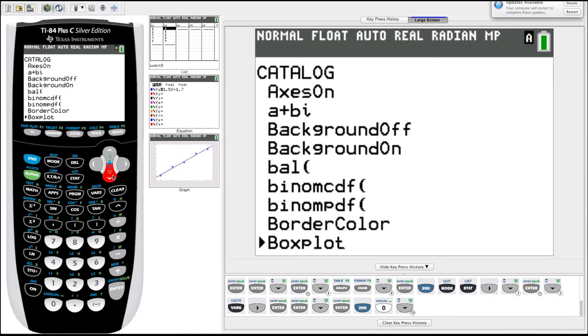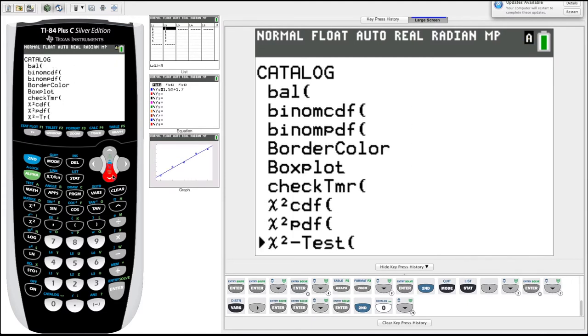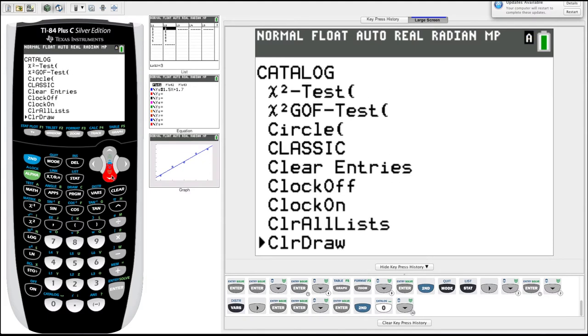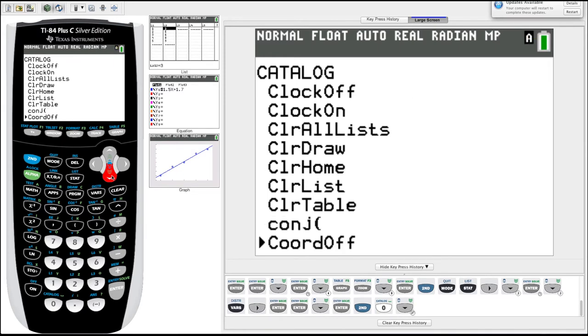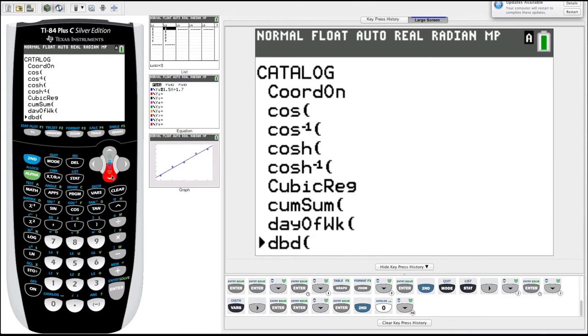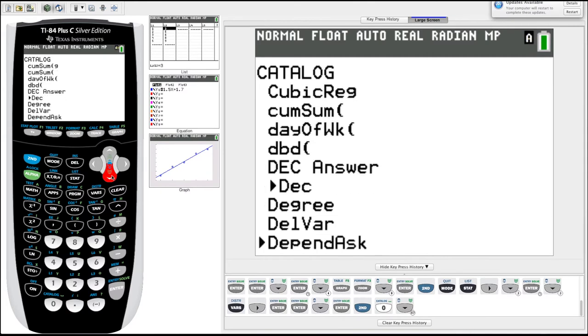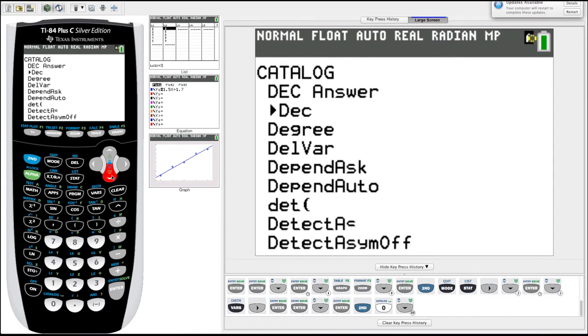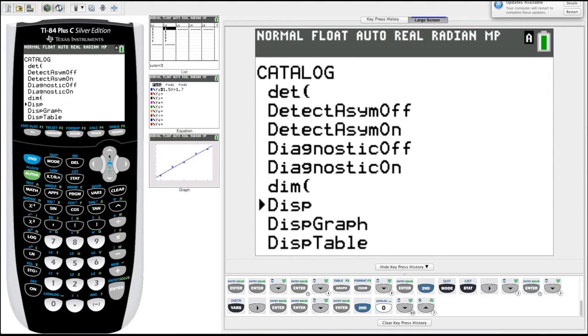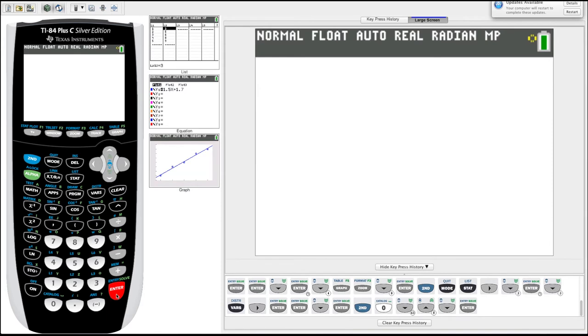And that will turn on the calculation of those r squared. Then you'd have to go back and recalculate your linear regression if you want to see those r squared values, r and r squared values. Okay, keep scrolling. We're down to d. It's going to be here soon. All right, there it is. Oh, passed it. All right, so we go up to diagnostic on. You just hit enter. Enter again. Done.